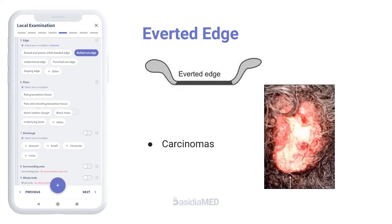When an ulcer is caused by fast-growing cellular disease, the growing portion at the edge of the ulcer keeps up and spills over the normal skin to produce an everted edge. Everted edge is commonly seen in carcinomas.